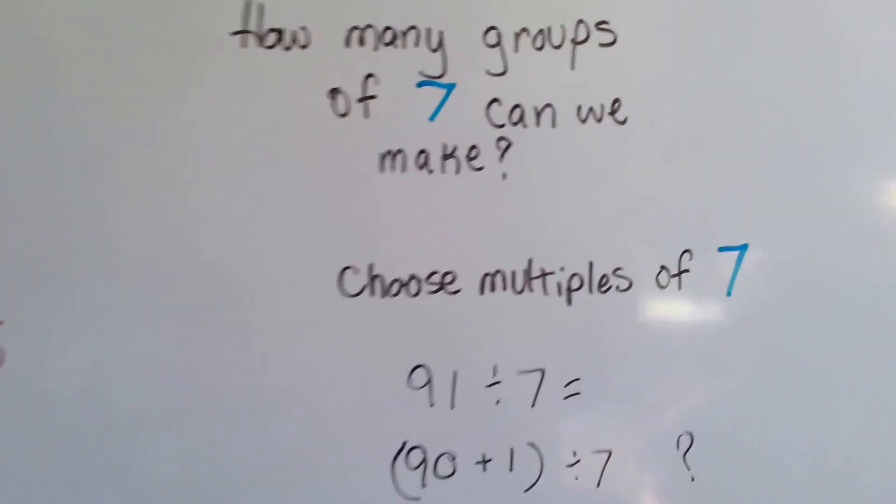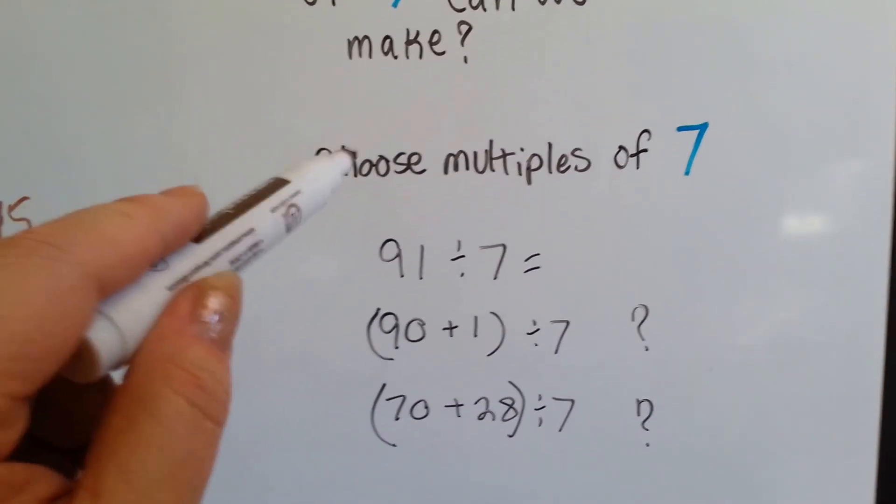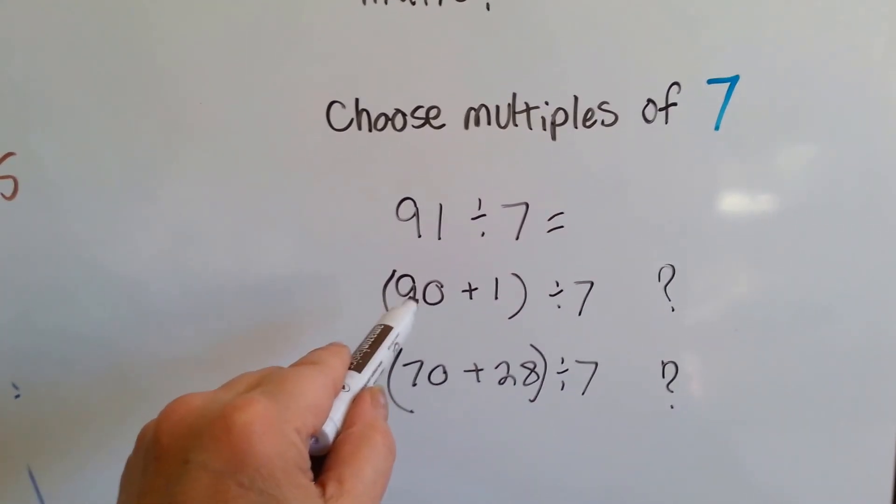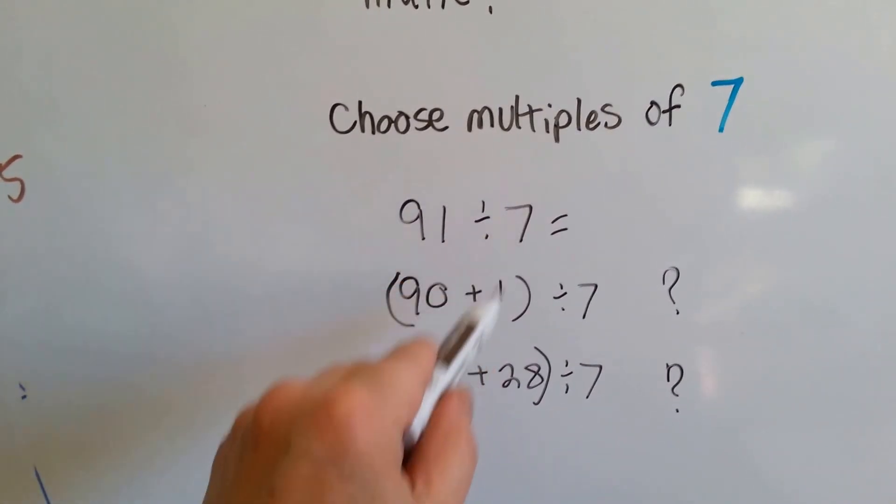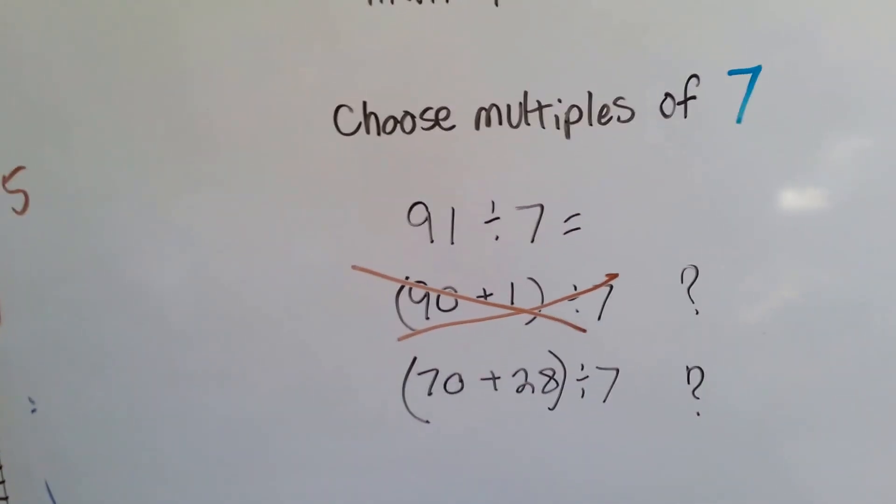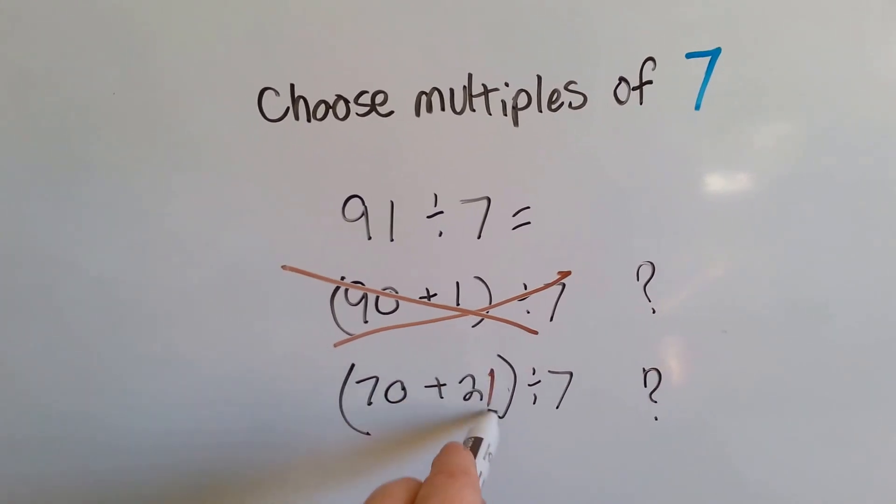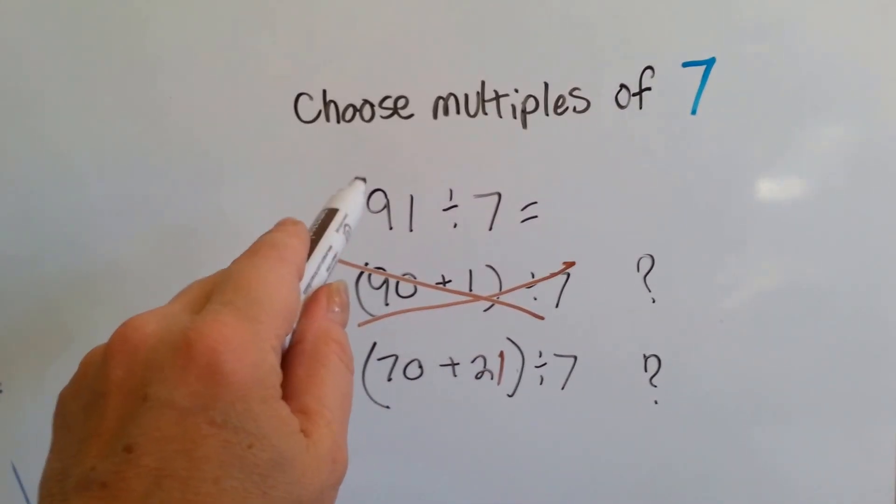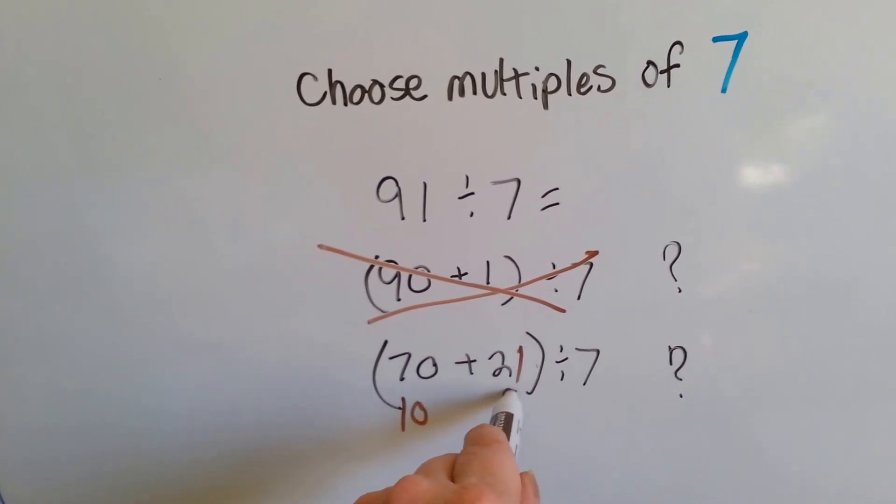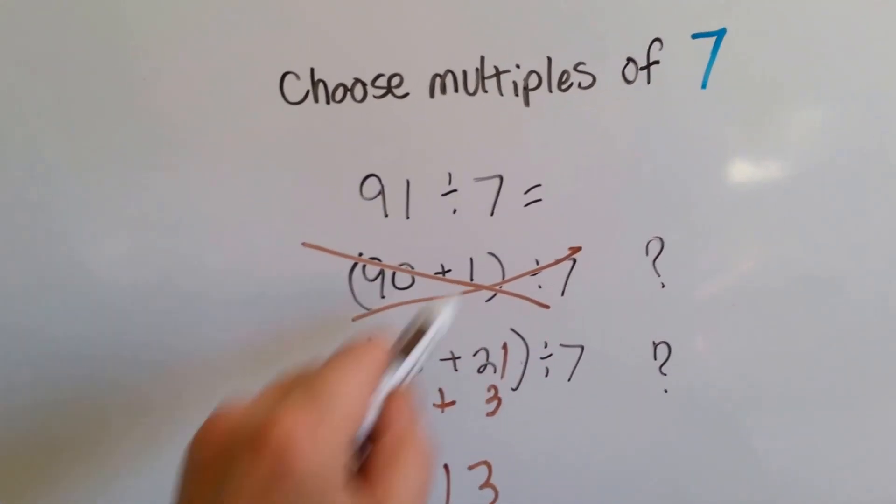So let's try one more, and we don't need to completely finish it. If we needed to make groups of 7, we need to choose multiples of 7. If we needed to do 91 divided by 7, would we break it up into 90 plus 1? Can you put 7 into 1? No. So this one would not be a good way to break it up. But if we broke it up into 70 plus 21, 70 and 21 would make 91. And 7 can go into both of these: 7 times 10 is 70, and 7 times 3 is 21. So guess what the answer is? 10 plus 13. 91 divided by 7 is 13.